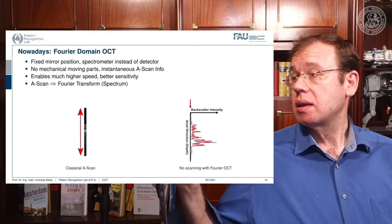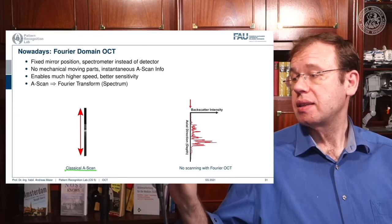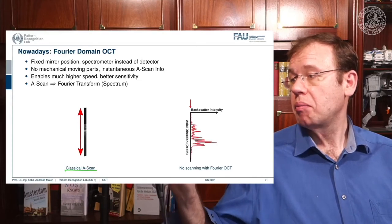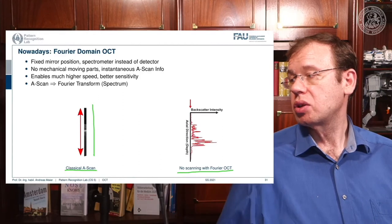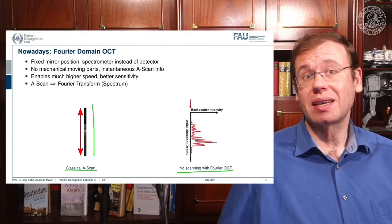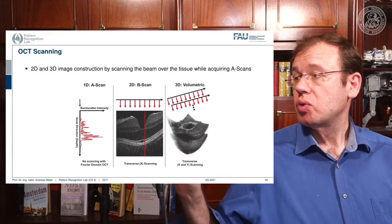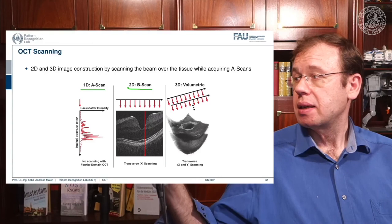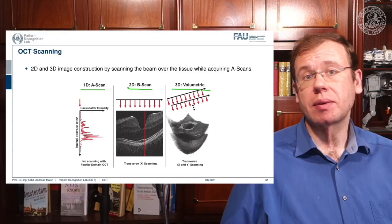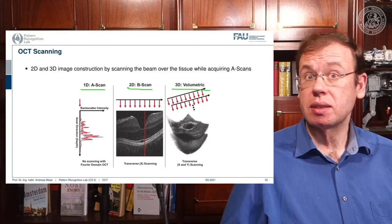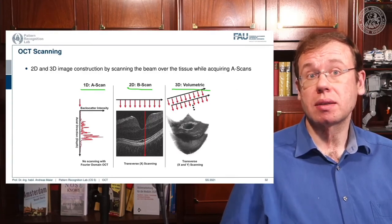Nowadays Fourier domain OCT is the standard. In classical time domain OCT you have to mechanically move the mirror to get the depth profile. With Fourier OCT, no additional scanning is required — you instantaneously get the entire A-scan in a single shot, with higher speed, better sensitivity, and no moving parts. Combining A-scans, B-scans, and volumetric acquisitions allows scanning of entire 3D volumes of the retina.